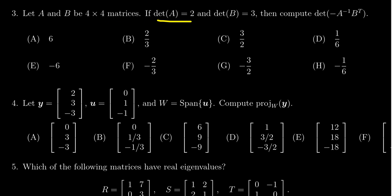We know the determinant of A is equal to two, and the determinant of B is equal to three. We're supposed to compute the determinant of negative A inverse times B transpose. So some things we need to be aware of when it comes to computing determinants here.